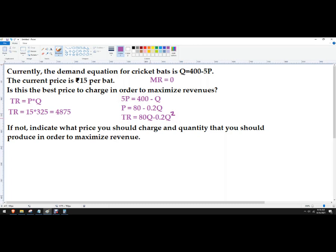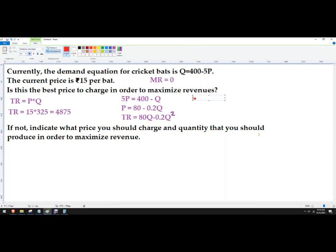So to get marginal revenue, marginal revenue is the partial derivative with respect to Q of our total revenue function. So marginal revenue is just 80 minus 0.4Q. So this is marginal revenue. Now I need to set that equal to 0. So 0 equals 80 minus 0.4Q.